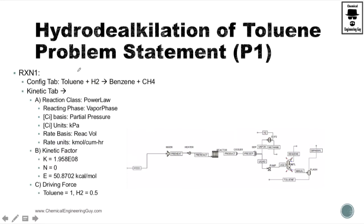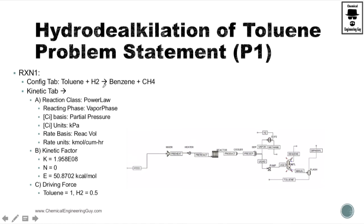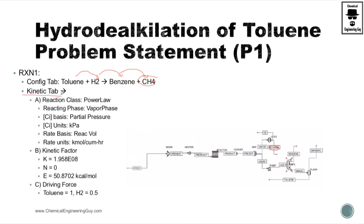Talking about the first reaction: it converts toluene and hydrogen into benzene and methane — this methane goes up to the vapor separation. We're going to set up the kinetics using a power law based on partial pressure in kPa. The rate units, kinetic factor, and driving force are all provided.